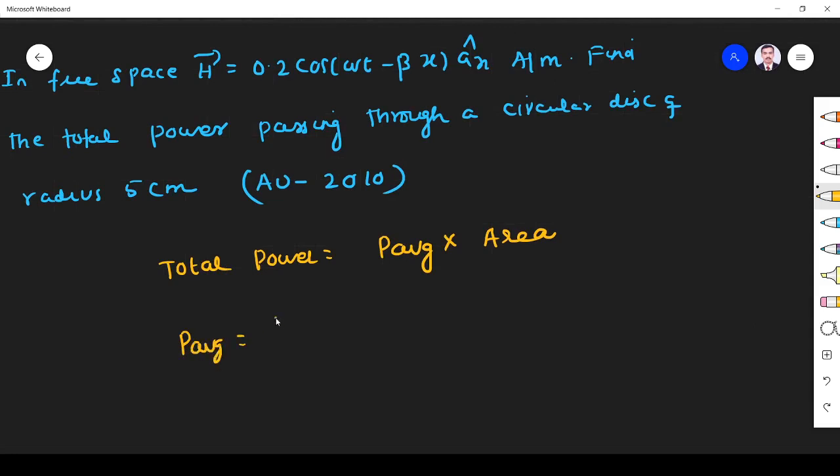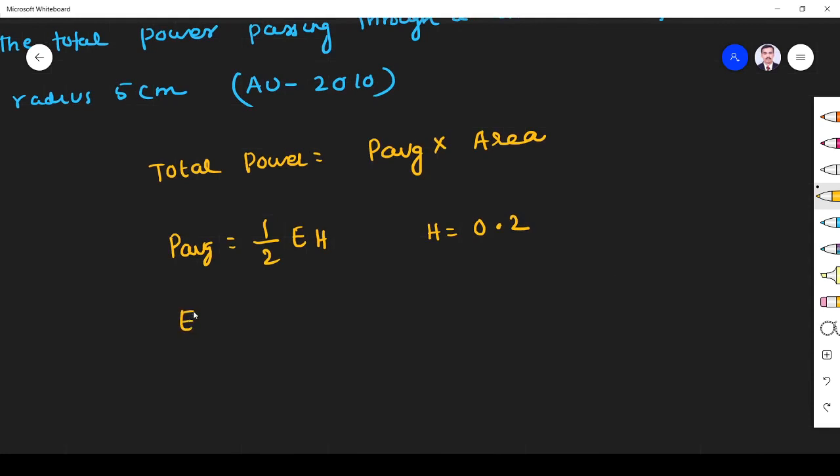P average is given by 1 by 2 e h. h is given. This is the magnitude of h. So h is given by 0.2. I want to find e value. We can find easily because e by h is equal to 120 pi.